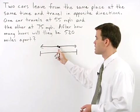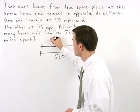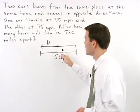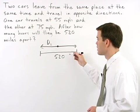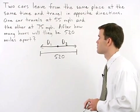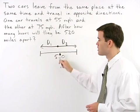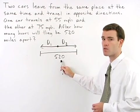If we use this arrow going to the left to represent the distance the first car travels and the arrow going to the right to represent the distance the second car travels, then you can see from the picture that the two distances will add to 520 miles.